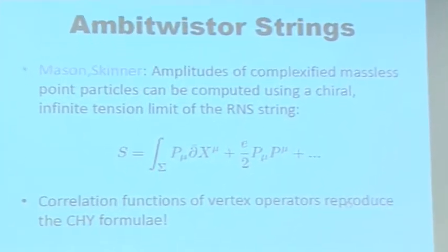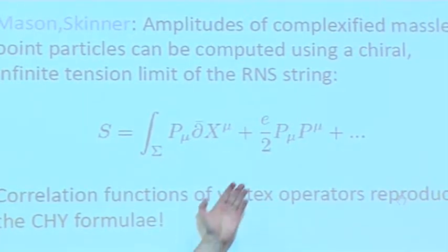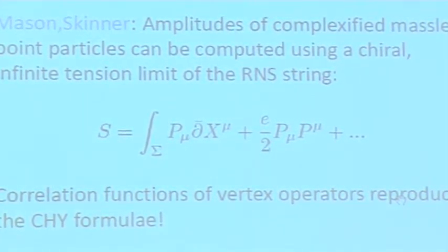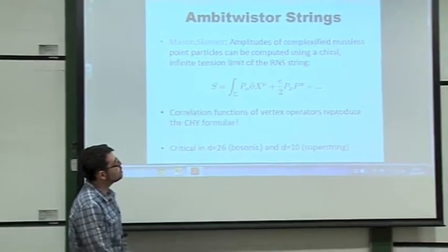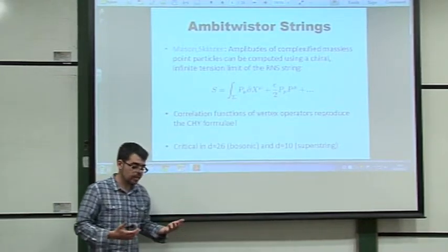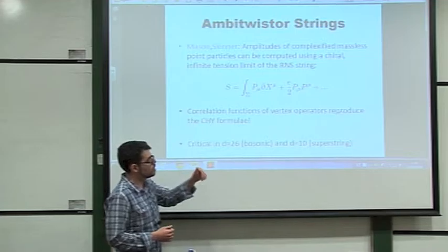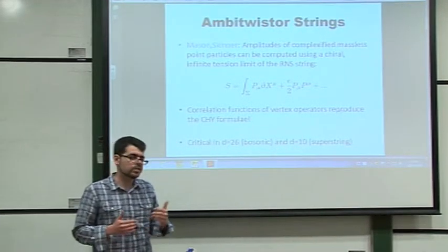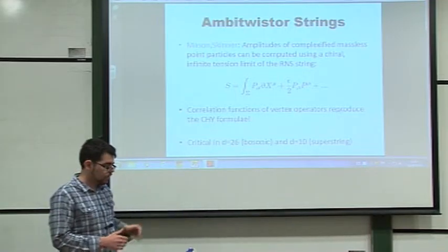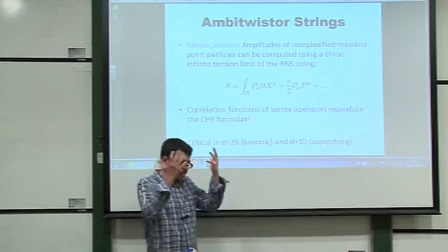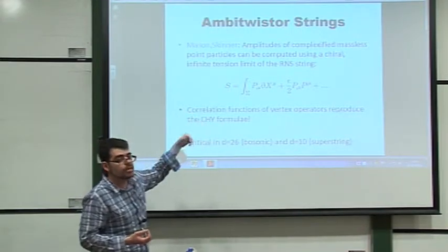Let me point out some basic features of the model. The fields are holomorphic — everyone is either left-moving or right-moving — and you also have a Lagrange multiplier constraint which essentially enforces that all states are massless. The correlation functions of this model precisely reproduce the CHY formulae. Furthermore, it's critical in D equals 26 for the bosonic case and D equals 10 for the superstring case, and the central charge counting works very similarly to the RNS string. But a crucial difference from the RNS string is that whereas the RNS string has ten-dimensional supergravity plus an infinite tower of massive modes, this model has only field theory degrees of freedom and no infinite tower.